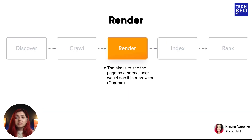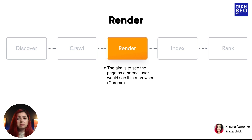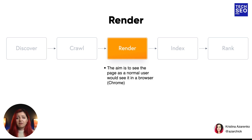Rendering is how Google sees the content of your page from a user's perspective. In addition to simple HTML, Google also fetches CSS, JavaScript, and multimedia resources in order to render a page using the recent version of Chrome browser — also known as Evergreen Googlebot. We'll talk much more about rendering when we discuss JavaScript SEO later in the course.